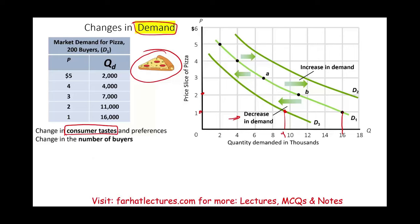Another factor is a change in the number of buyers. Going back to college campuses — if you have more students on campus, some of those students will consume pizza. If the prices stay the same, you have more people consuming pizza. At $2, demand might go from 11 up to approximately 17 — not because the price changed, just because the number of students went up. And the opposite is true: after COVID, many students aren't on campus, so fewer buyers means the quantity demanded goes down.